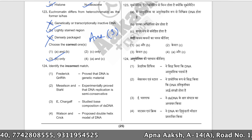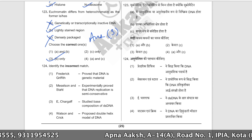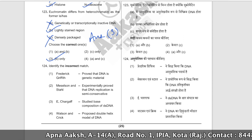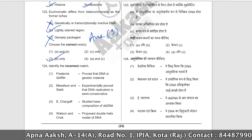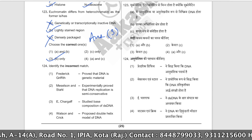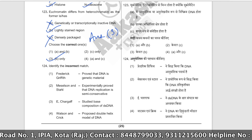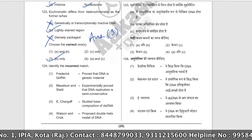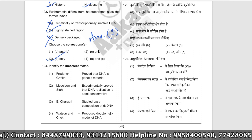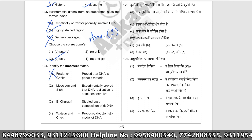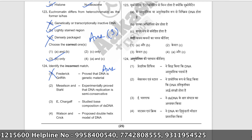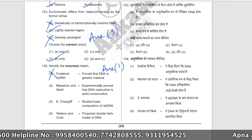Identify the incorrect match. Frederick Griffith proved the transformation principle — not that DNA is the genetic material. It was the Hershey and Chase experiment that confirmed DNA as the genetic material. This match is incorrect. The correct answer is option number one.